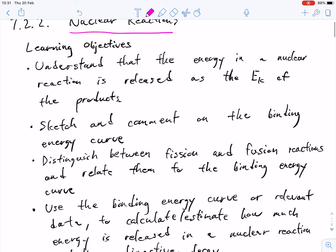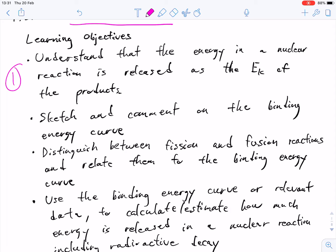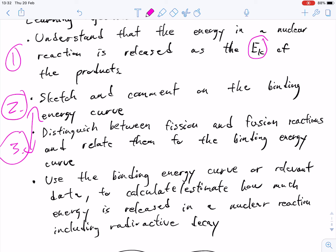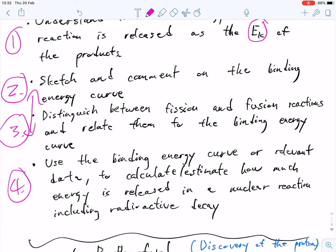So in this video, we're going to be looking at nuclear reactions. Here are some of the learning objectives, and I'll just quickly read over these with you guys. First learning objective is to understand that the energy in a nuclear reaction is released as the kinetic energy of the products. Second learning objective is to sketch and comment on the binding energy curve. Third one is to distinguish between fission and fusion reactions and relate them to the binding energy curve. And the last one is to use the binding energy curve or relevant data to calculate or estimate how much energy is released in a nuclear reaction, including radioactive decay.